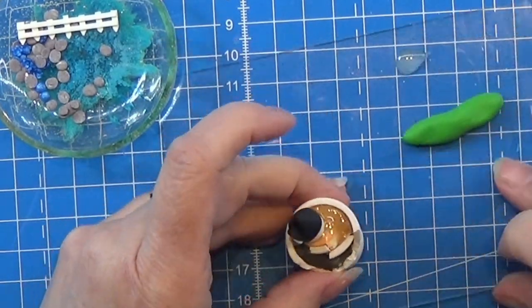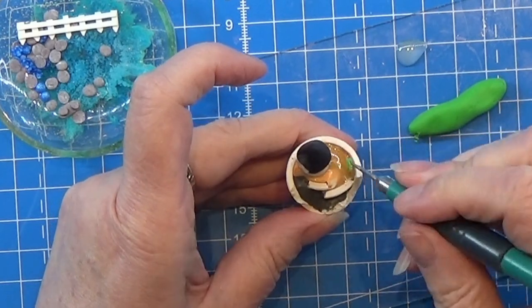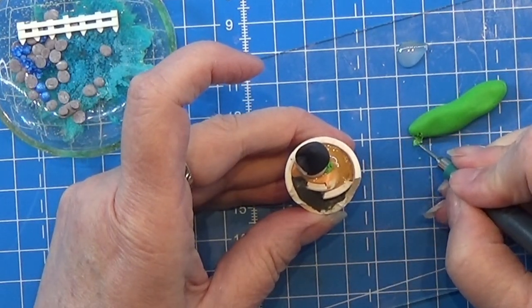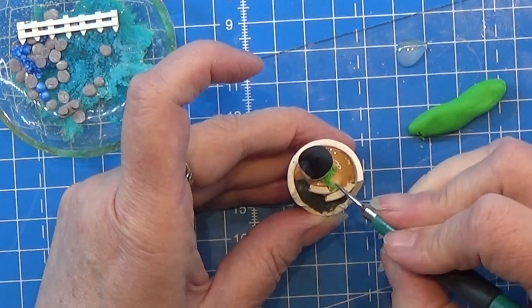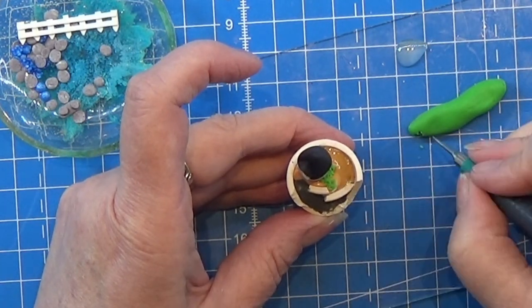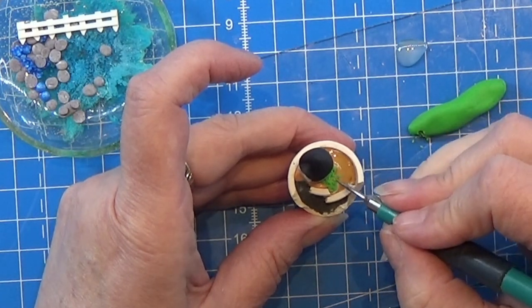The grass is kind of simple to make. I have a log of green clay and I am just scratching a tiny bit of it with a needle tool and then placing it around the little hut and placing it where I want it to.